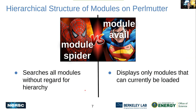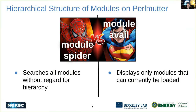What is the difference between `module spider` and `module avail` on Perlmutter? `module spider` searches without regard for hierarchy. On Perlmutter, module files are arranged hierarchically — if you use `module avail`, a module won't be shown to you unless you already have all its dependencies loaded. So `module avail` will not show a module as available if its dependent modules aren't already in your environment. That's why you'll see a difference in output between the two commands.